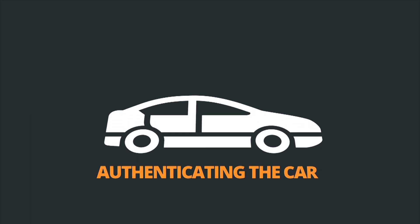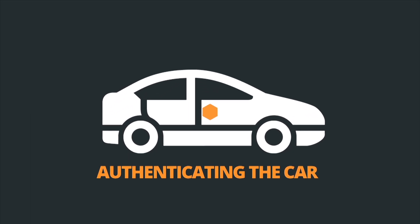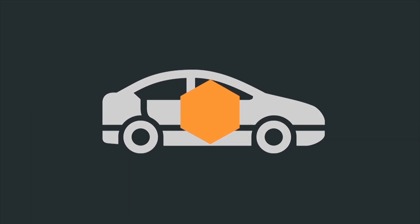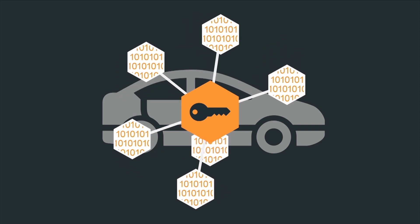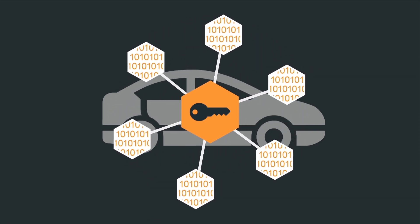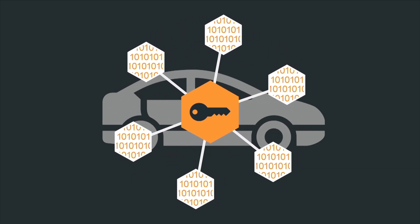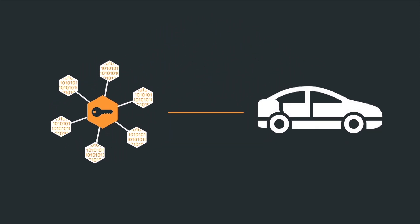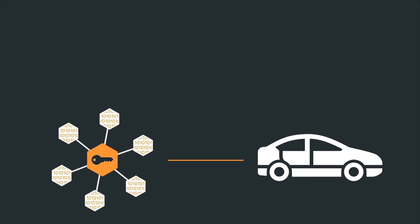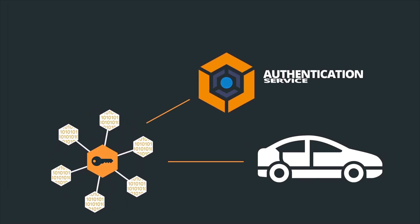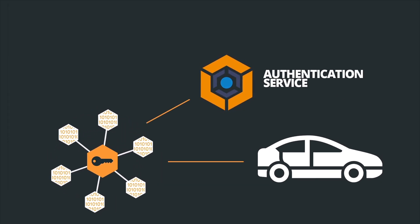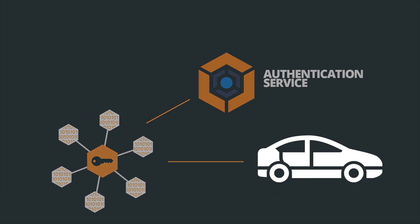Let's start off by authenticating the car. Advanced dynamic keys generated from properties within the hardware subsystem create a digital DNA mapping that is unique to that vehicle. If there's a match between the car's digital DNA and the Device Authority authentication service, we can assure the identity of the vehicle.